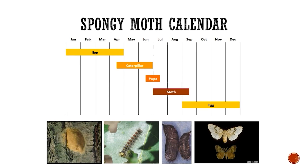This shows the life cycle of the spongy moth and the times on the calendar when the different stages of that life cycle would be visible. Currently, we would see egg masses, which can be located on trees or other outdoor objects. There in the lower left, you can see an egg mass. It's sort of a tan color, usually an inch or so in size and kind of fuzzy, velvety to the touch. And spongy,